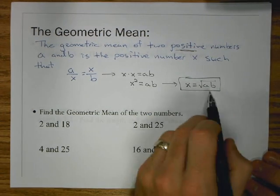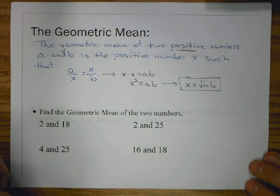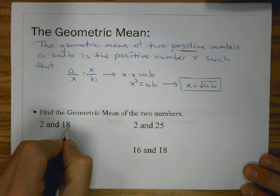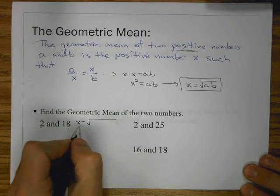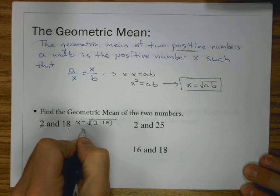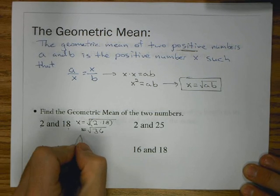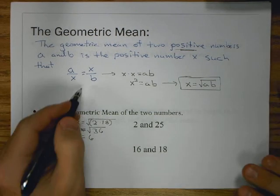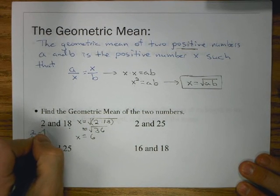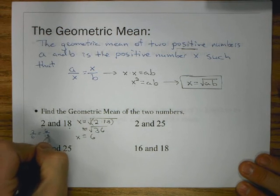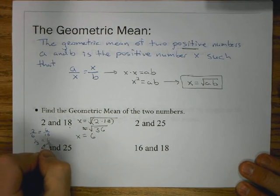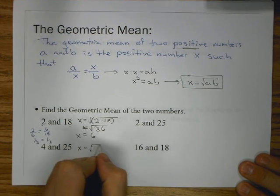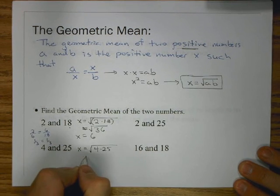Let's take that idea of cross product we had. If I took this and did cross product, I would get X times X equals A times B. Well, X times X is just X squared equals A times B. Let's take the square root of both sides. So, now I get X equals the square root of A times B. So, this is going to be the rule we're going to use for geometric mean. If they ask for the geometric mean of two values, we're going to multiply them and take the square root. Let's find the geometric mean of the two numbers, 2 and 18.